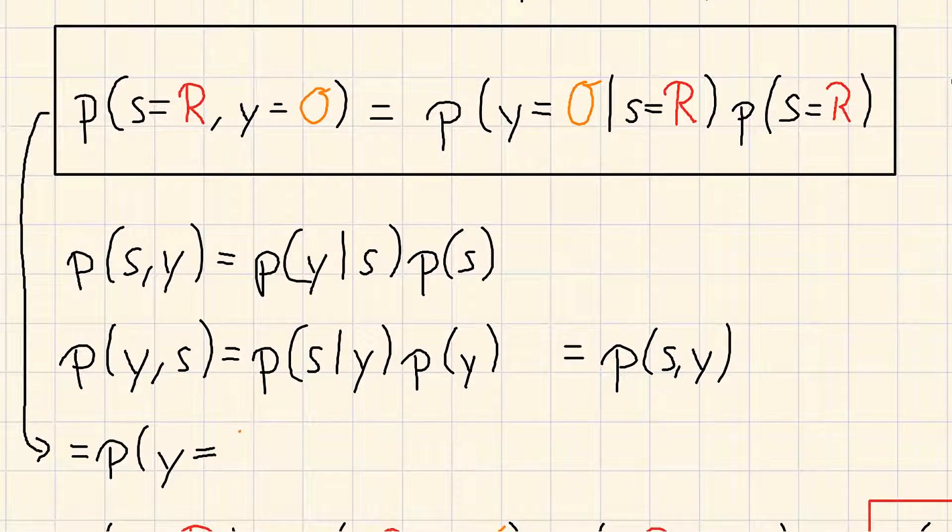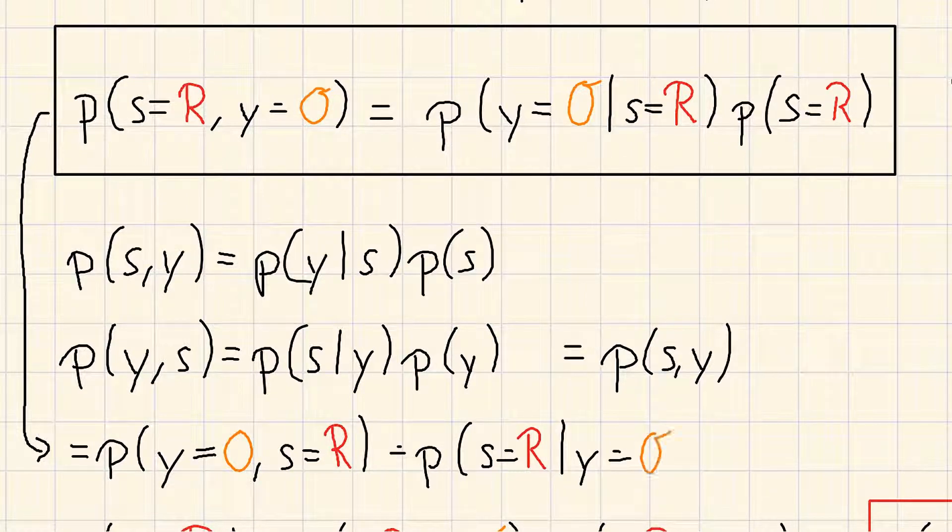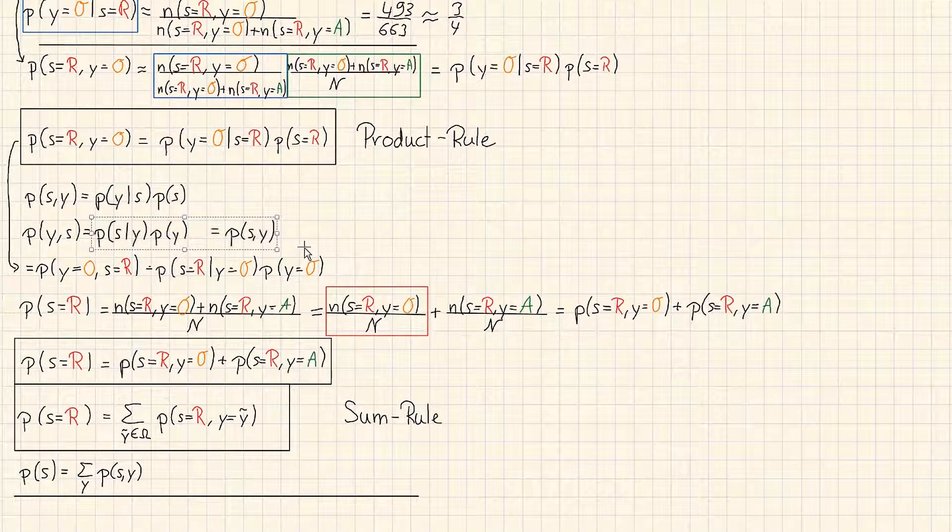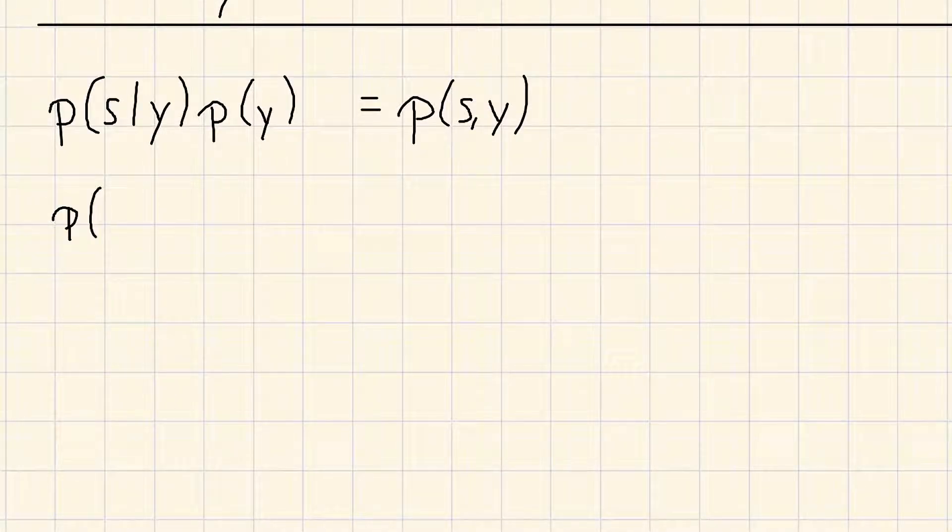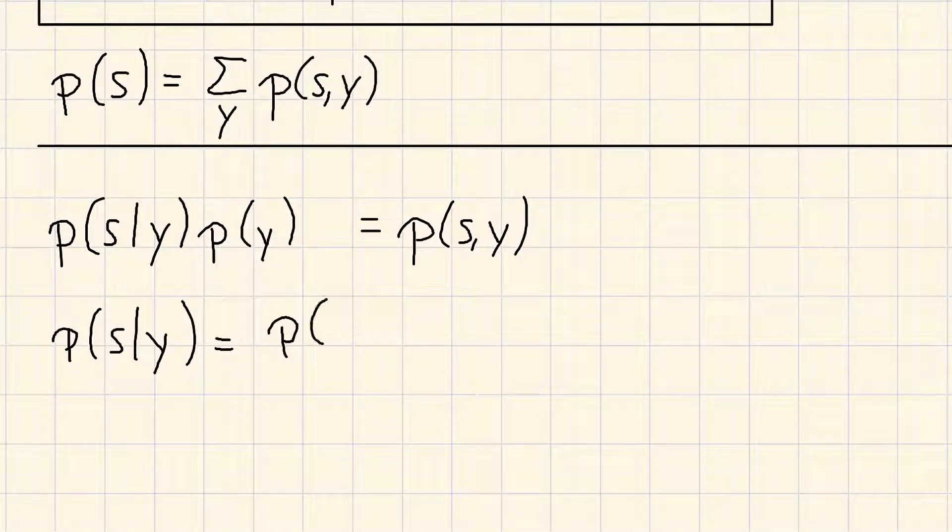So we can also write it down like this now. So this is also the probability of the red box given that we picked an orange times the probability that we pick an orange. That means that we can derive the following formula out of that. We just write down p of s given y is equal to p of y given s times p of s divided by p of y.